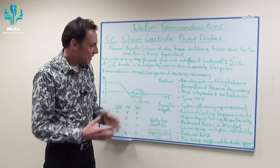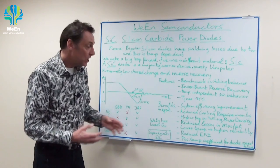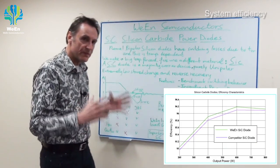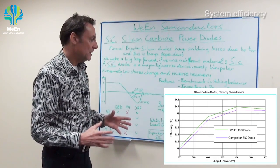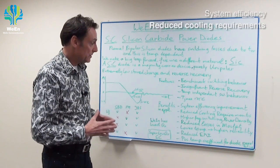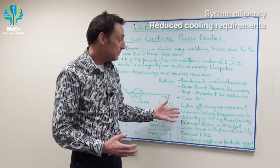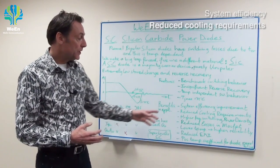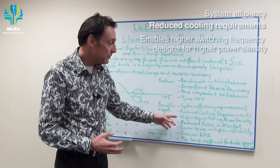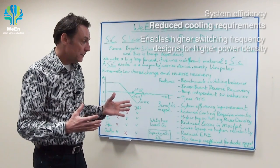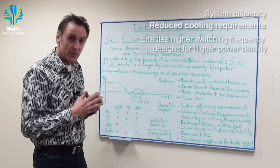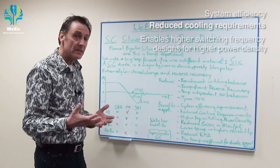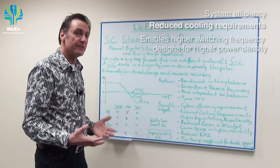The benefits in applications are system efficiency improvement, which is of course very important to our customers, and reduced cooling requirements. You may be able to go to a smaller heat sink if you use a silicon carbide diode. You can also go to a higher frequency of switching — switching frequencies have already gone up from 70 kHz to 100 kHz, and we've even seen applications with 144 kHz.